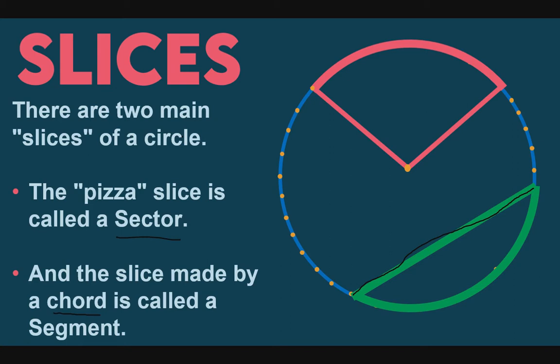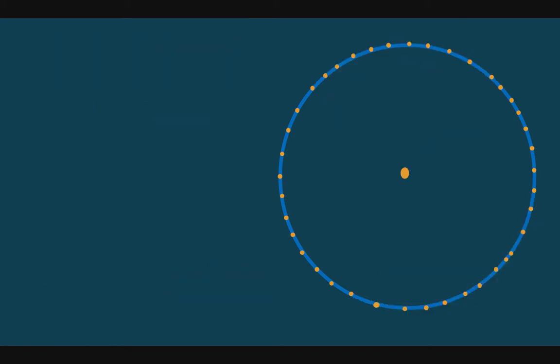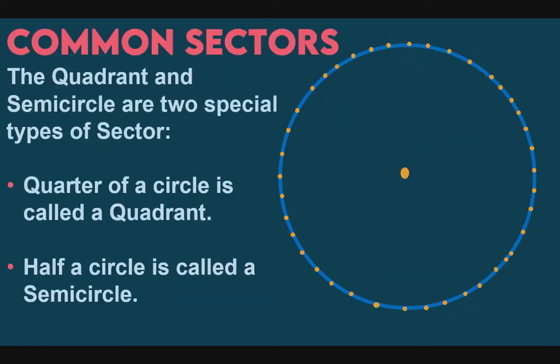So a line segment and a segment are different. When we say line segment, that is just a line. When we say segment, it is a part — like a segment in a TV variety show. So in a circle, we also have a segment.